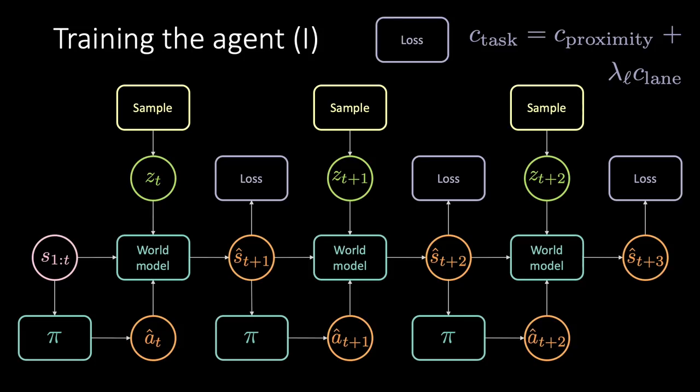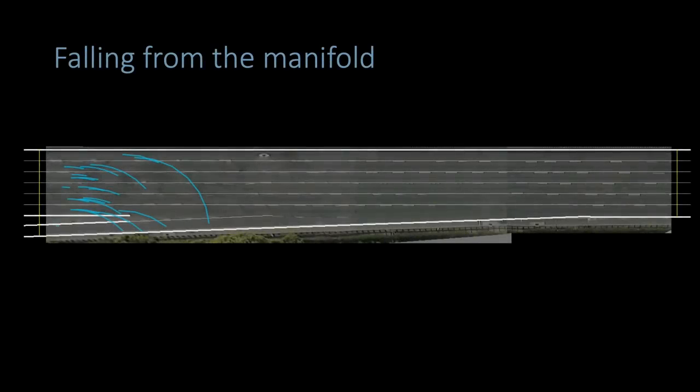Does it work? Nope. What happens is that while we are trying to minimize that cost, the network tries to cheat by coming up with corrupted state predictions that minimize the cost — perhaps by setting all pixels to zero. We are falling outside the manifold. We can notice how we end up crashing outside the street or against other vehicles.